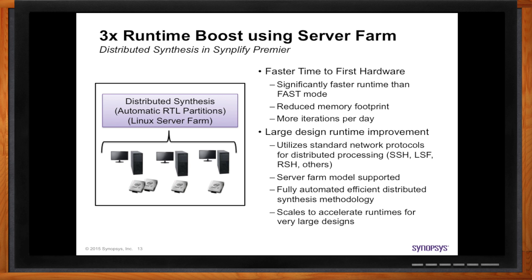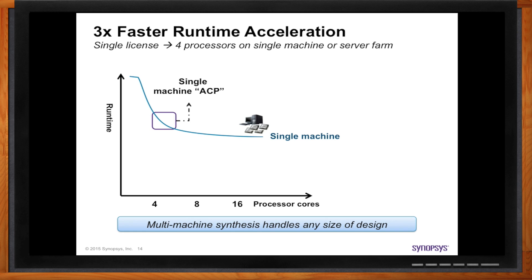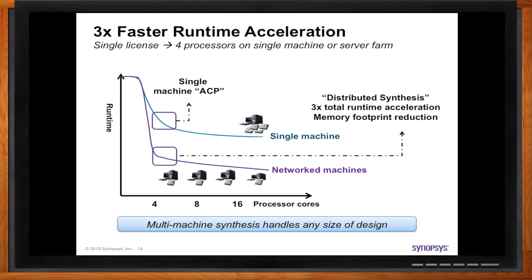When we look at the overall runtime acceleration across several technologies: using a single machine with compile points technology might give you a runtime of, say, nine hours. When you then bring in the ability to network out to multiple machines and utilize other processors, you can see a 3x runtime improvement — giving you more iterations per day. Through distributed synthesis, you also get that 3x improvement plus memory footprint reduction, because you don't have to load the entire large design onto a single machine, and you don't run out of system memory during compiles.